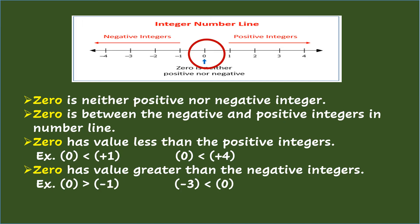0 has value greater than the negative integers. Example: 0 > (-1). (-3) < 0.